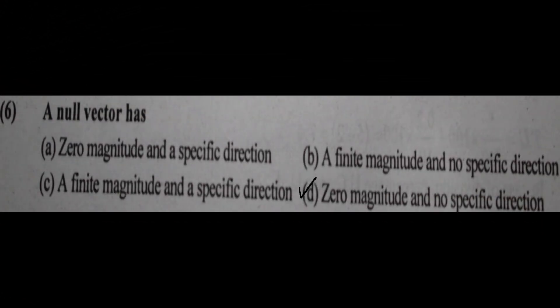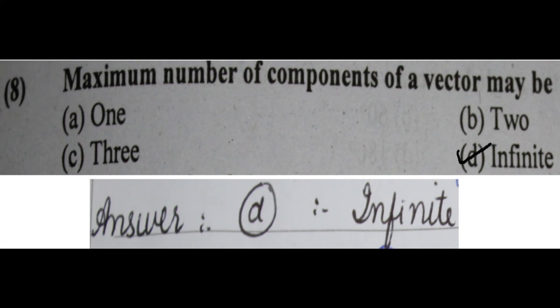Next question: a null vector has zero magnitude and no specific direction — option D. The following question asks for the maximum number of components a vector may have. The answer is infinite, because the maximum number of components of a vector is always equal to infinity. So option D is correct.